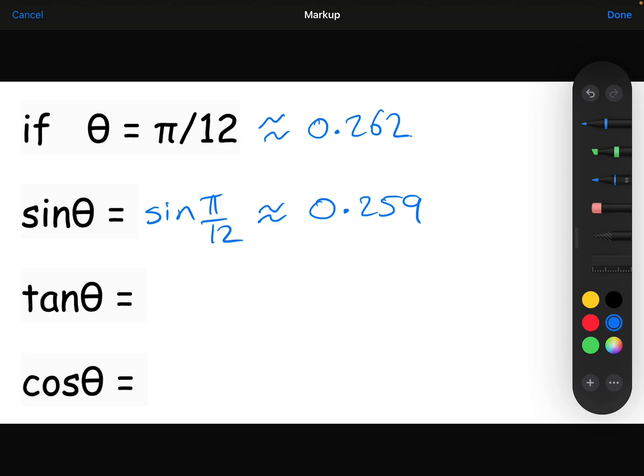If I was to type tan π over 12 into my calculator to three decimal places, I'd get 0.268, which again pretty close to my 0.262.